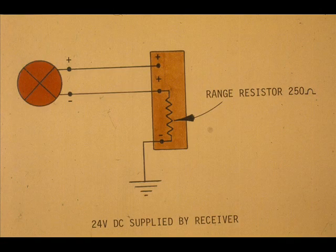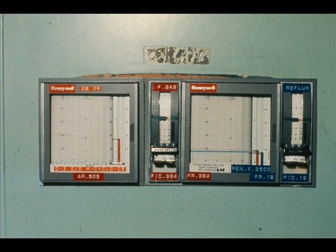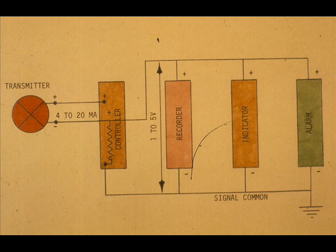The transmitter is connected in series with a resistor with one receiver only in the instrument loop. Since Honeywell receivers require a 1 to 5 volt DC signal, the range resistor is 250 ohms for the 4 to 20 milliamp DC transmitter.